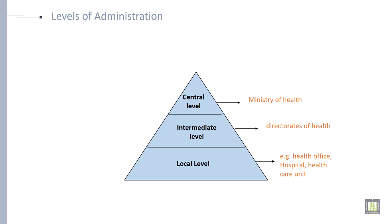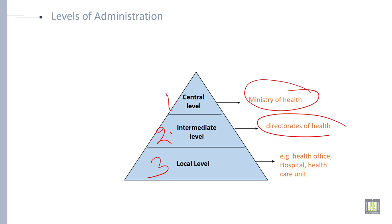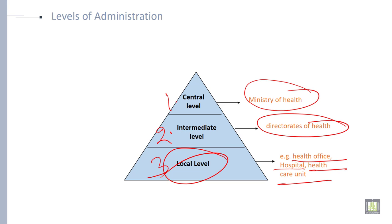Now, the level of administration. There are three levels of administration as we discussed earlier: central level, intermediate level, and local level. The central level is the highest level of administration — for example, Ministry of Health. The intermediate or second highest level is like the Directorate of Health. The lowest level of health administration is the local level, like health offices, hospitals, and healthcare units in local areas.